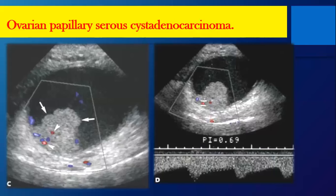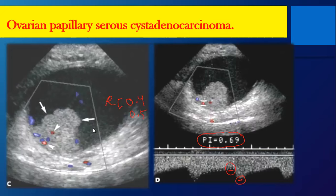Here we have a lesion with a soft tissue part. By the Doppler, we have the wave — look at the diastole and the systole. The difference is slight, so the diastole is close to the systole. This is more towards malignancy. By numbers, the resistive index is less than 0.4 to 0.5, and the PI is less than 1 — these are the incriminating numbers suggesting malignancy. We can suggest this by the Doppler, looking at the numbers and the shape of the wave.